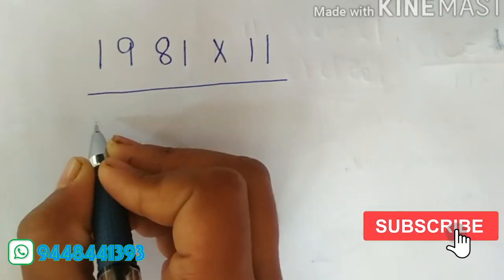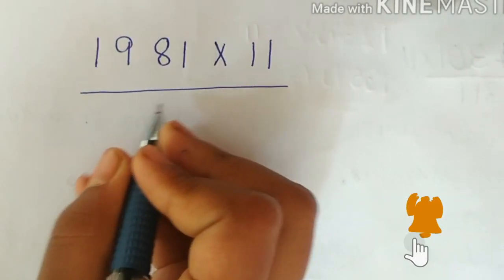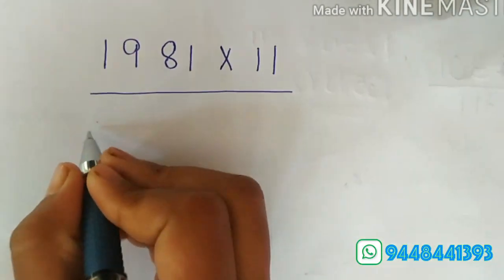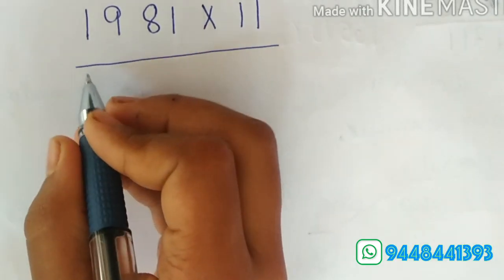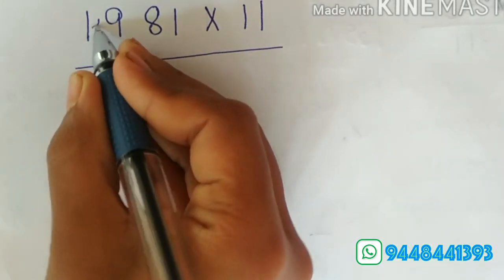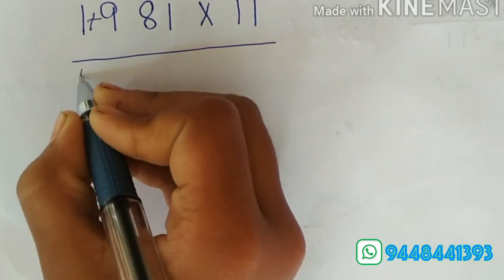Let's see how to multiply if we get carry. For example, 1981 into 11. Here, as always, the first digit is same, that is 1. And add 1 plus 9, that is 10. So, write 0 and carry 1 to the previous digit.